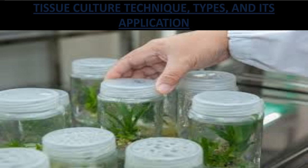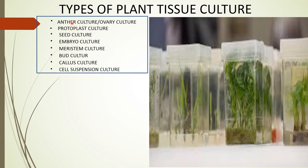Today, I am going to explain about tissue culture techniques, types and its application. There are different types of plant tissue culture. They are anther culture or ovary culture, protoplast culture, seed culture, embryo culture, stem culture, bud, callus, and cell suspension culture.